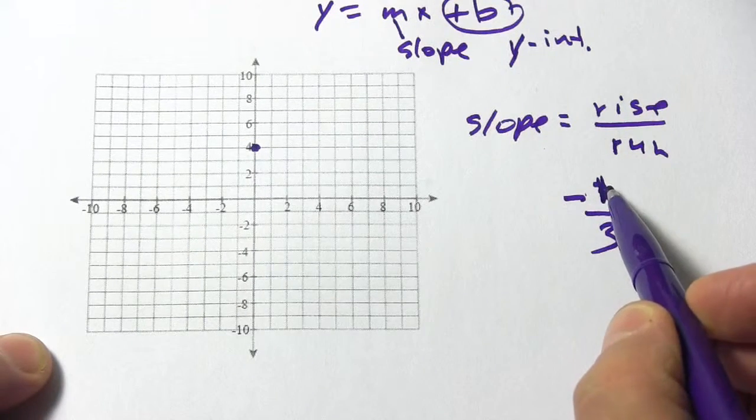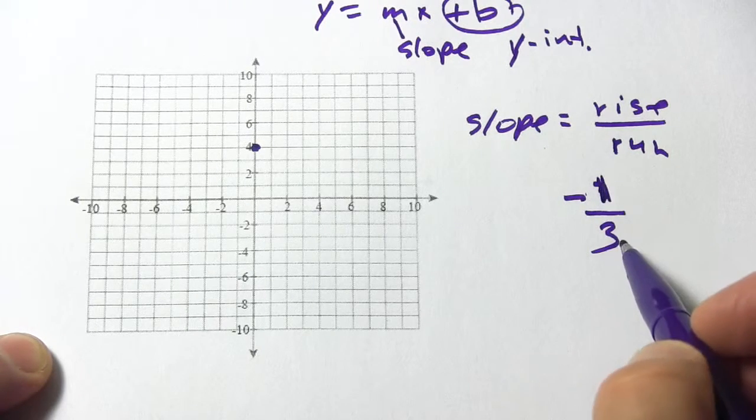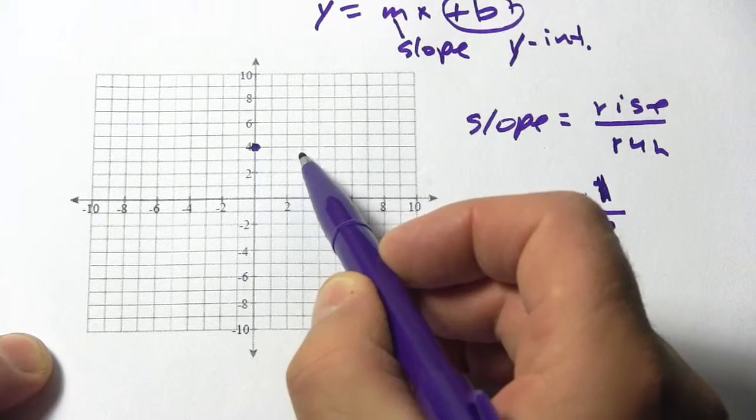So what that means is our rise is negative one, that's down one, and then our run is three, so down one over three. I'm just going to do that down one, one, two, over three.